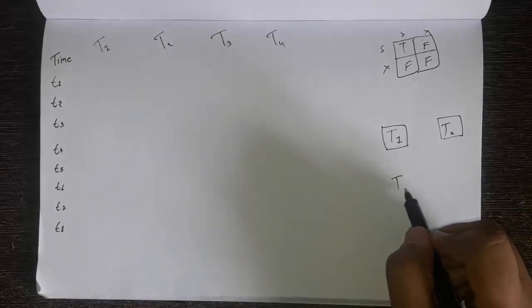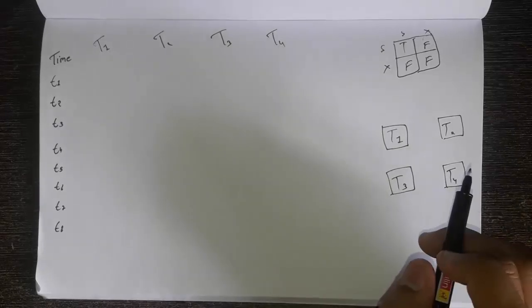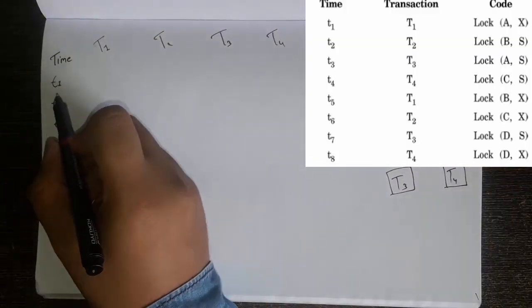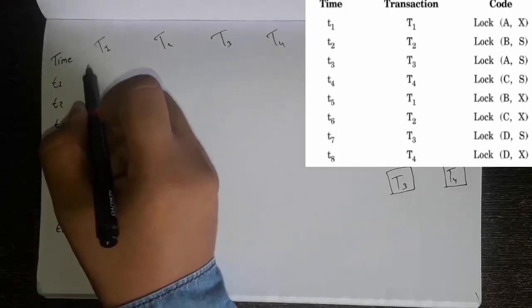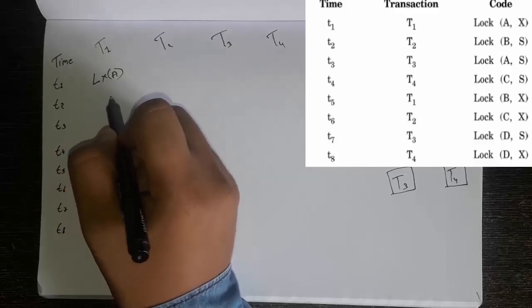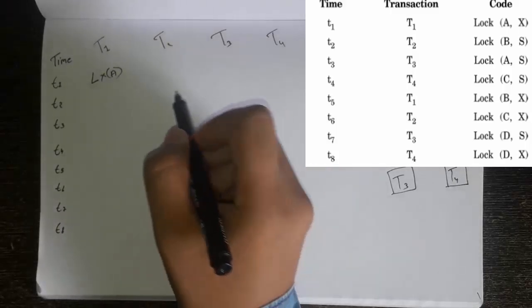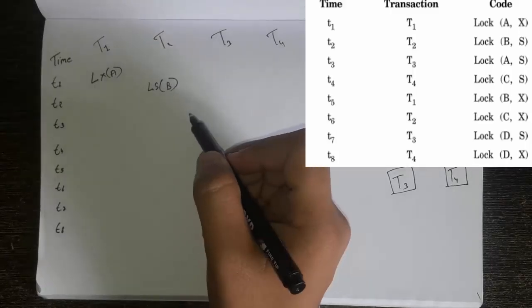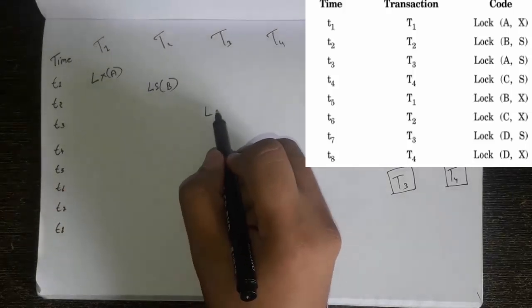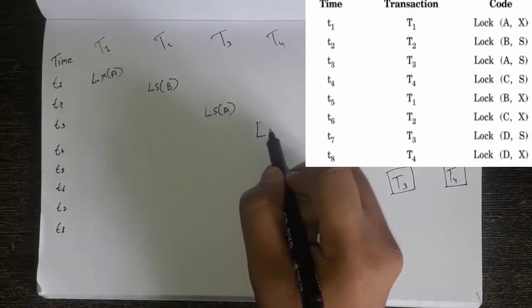Write T1, then T2, then T3 — because there are four transactions — then T4. Now in the code section, the first entry is Lock-X of A, written at time T1 for transaction T1, so write L-X(A). Then at time T2, transaction T2 has Lock-S of B, so write L-S(B). Then transaction T3 has Lock-S of A, so write L-S(A). Then transaction T4 has Lock-S of C, so write L-S(C).